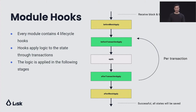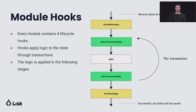Next up, I'll talk a little bit about module hooks. Every module has four lifecycle hooks. These hooks apply logic to the state through transactions, and the logic is applied in the following stages: before block apply, before transaction apply, after transaction apply, and after block apply. The block stages occur for every block, and the middle two transaction stages happen per transaction.